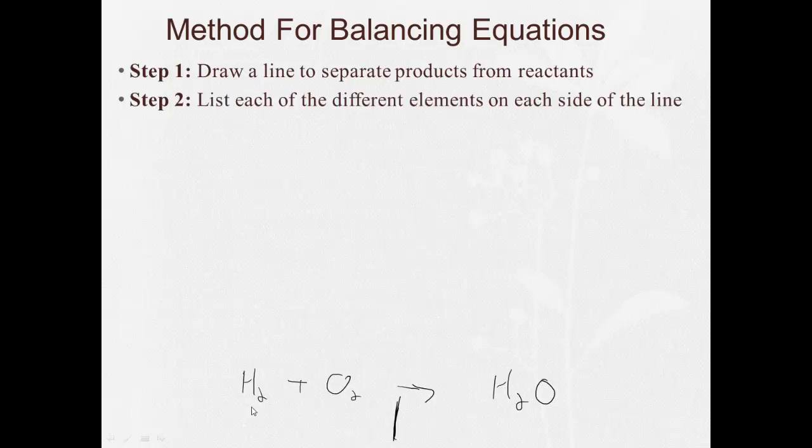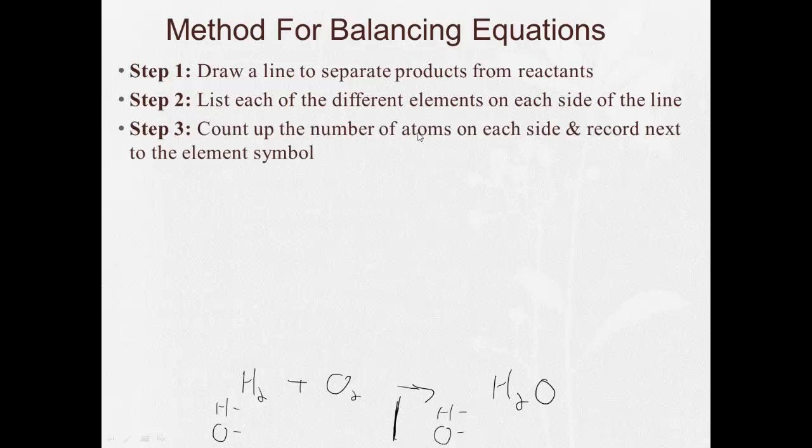List each of the different elements on each side of the line. So on this side, I have hydrogen and I have oxygen. Same on this side, I have hydrogen and I have oxygen. Step three, count the number of atoms on each side and record it next to the element symbol. So on the left, I have two hydrogens and two oxygens. On the right, I have two hydrogens and one oxygen. So I can see right here that it's not balanced.